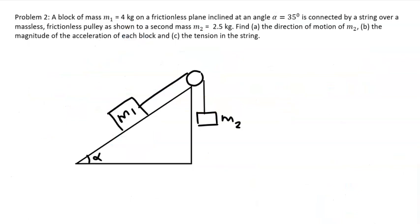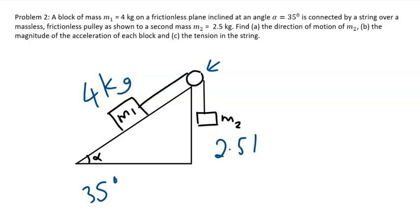Let's look at another problem. A block of mass 4 kg sits on a frictionless plane inclined at 35 degrees. It is connected by a string over a massless, frictionless pulley to a second mass of 2.5 kg. We want to find the direction of motion of m2, the magnitude of acceleration of each block — both blocks share the same acceleration — and the tension in the string.